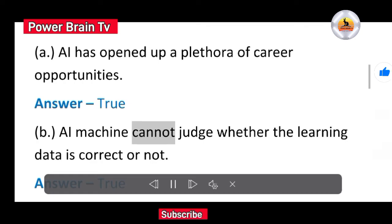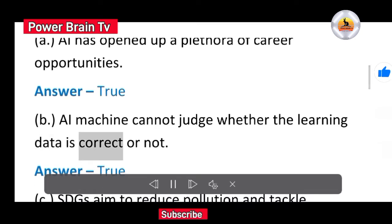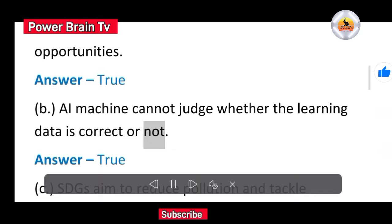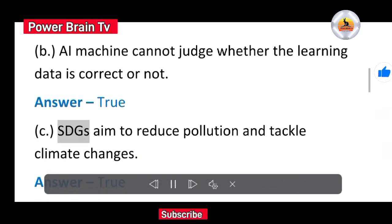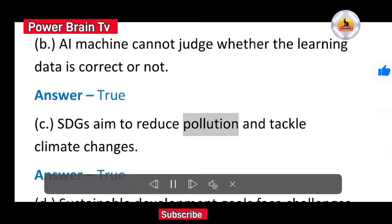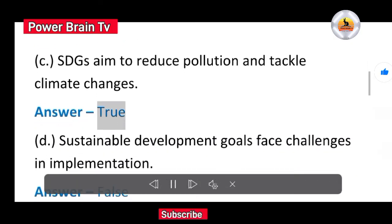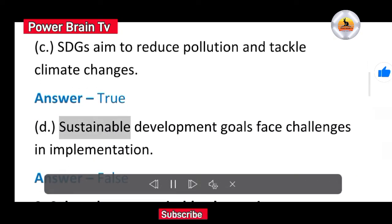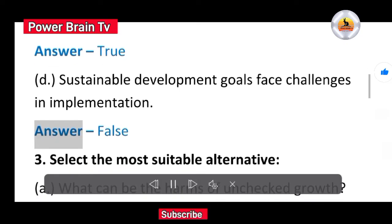B. AI machine cannot judge whether the learning data is correct or not. Answer True. C. SDGs aim to reduce pollution and tackle climate changes. Answer True. D. Sustainable development goals face challenges in implementation. Answer False.